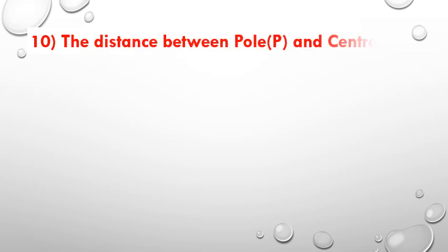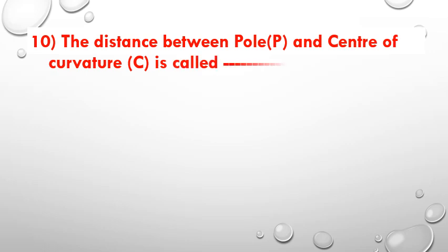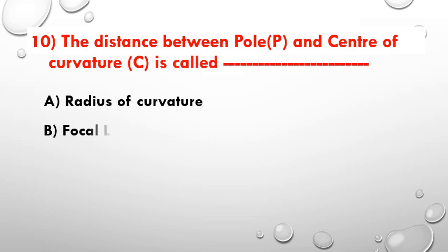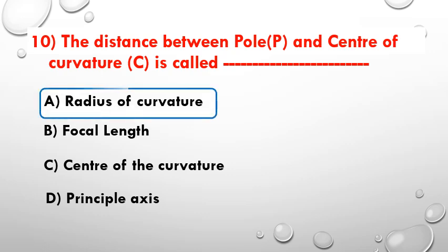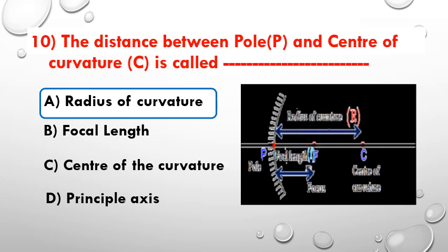The distance between the pole and center of curvature is called the radius of curvature. Observe the picture.